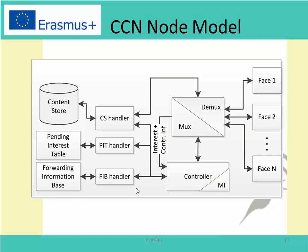In this figure you see the structure of the CCN node. There are three main components in a CCN node: the content store, the pending interest table, and the forwarding information base. And of course, there are also the faces corresponding to the outgoing links of the node.